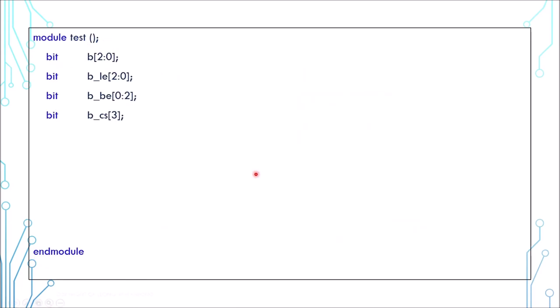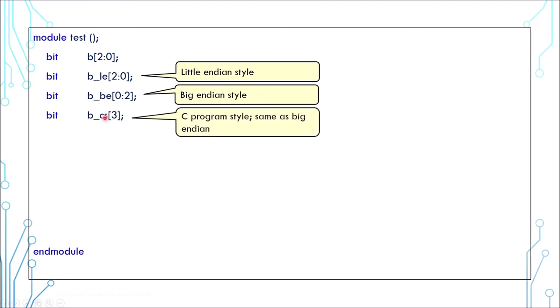An array can also be of little endian or big endian. This is little endian style and it is pretty common. You can reverse the order of the index and create a big endian array. You can also create an array by simply providing a size number instead of a range. This is how C programming does it and it is the same as a big endian style.